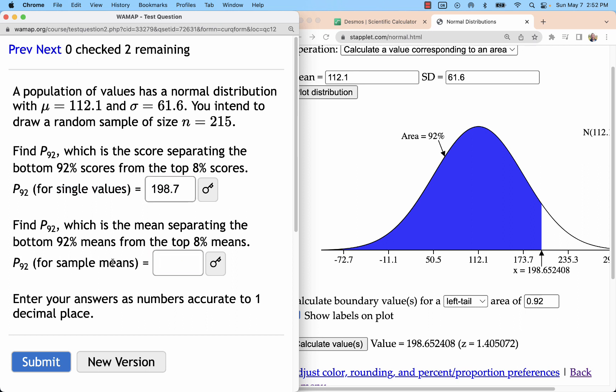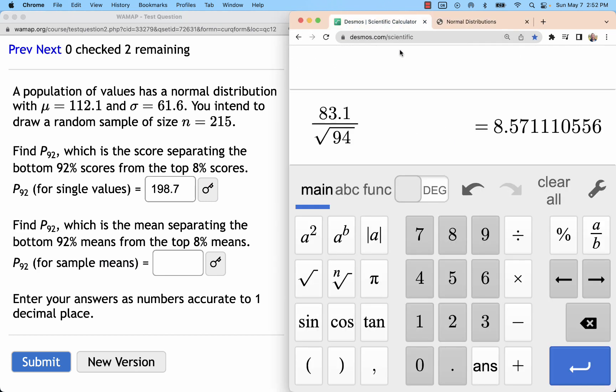Now if I look at sample means, I need to account for the n. The n is 215. So I will find the standard error, taking 61.6 and dividing by the square root of 215 for this problem.